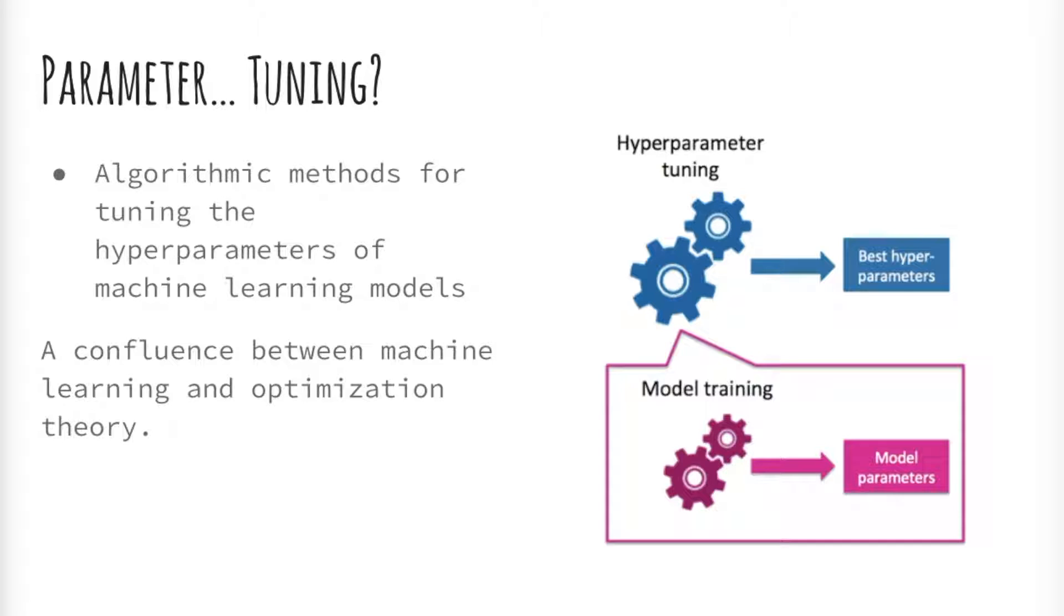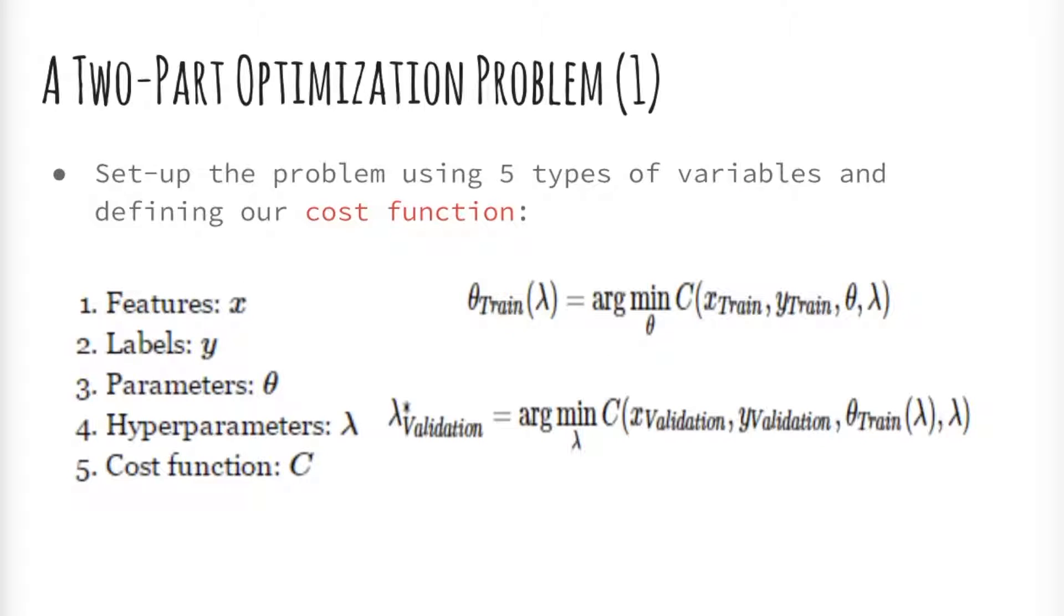This two-part optimization problem is similar in many ways to stepwise regression. It is not clear if there is an analytic way to solve this problem. More abstractly, instead of an analytic approach, there are ways to find better approximations to lambda star using less computer time.